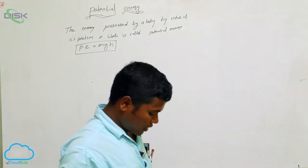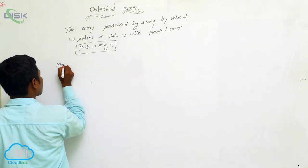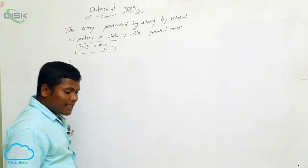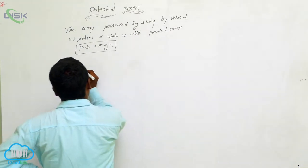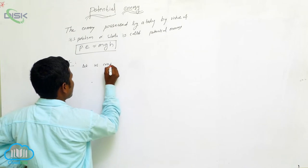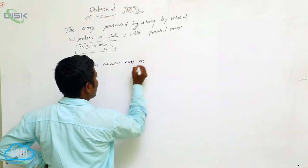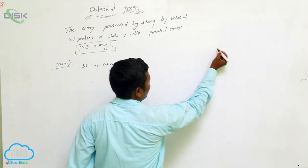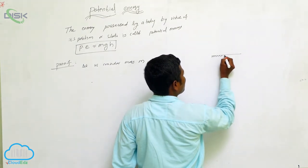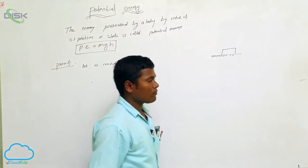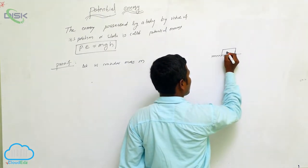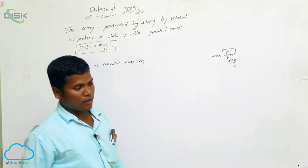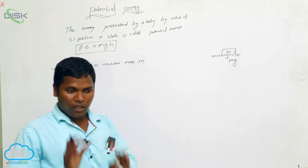Now we are going to derive the potential energy formula. How can we derive the potential energy? Let us consider a mass M. It is initially on the ground. Now I am going to draw the diagram. This is the ground. This is the mass.